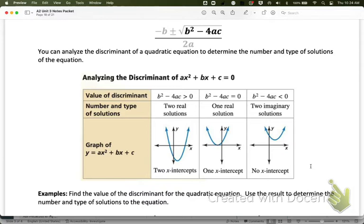we can predict: if we know what the discriminant does, then two real solutions means it's going to have two x-intercepts, one real solution means it's going to have one x-intercept, and imaginary solutions means it's going to have no x-intercepts.